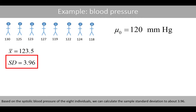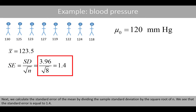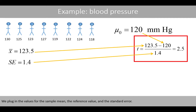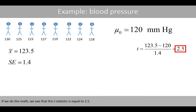Based on the systolic blood pressure of the 8 individuals, we can calculate the sample standard deviation to about 3.96. Next, we calculate the standard error of the mean by dividing the sample standard deviation by the square root of n. We see that the standard error is equal to 1.4. We are now ready to calculate the t-statistic. We plug in the values for the sample mean, the reference value, and the standard error. If we do the math, we see that the t-statistic is equal to 2.5.